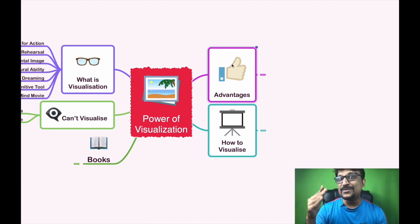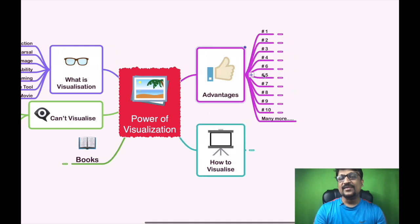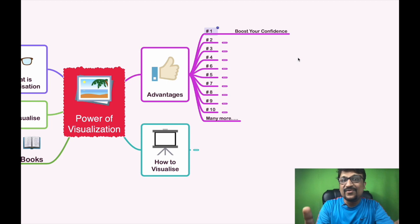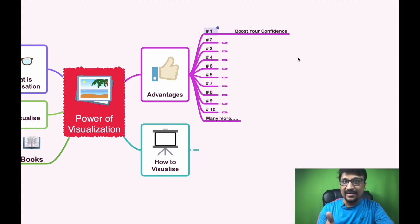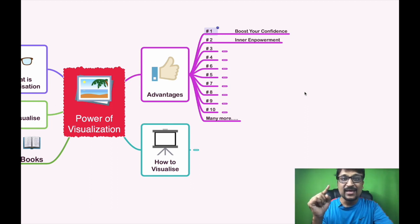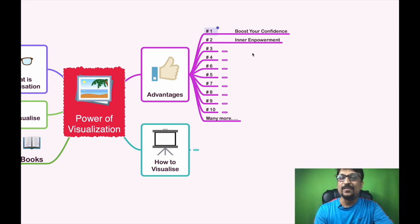Now let us move on to the advantages — why we need to use this visualization process. I listed the top 10 points. The first advantage: if you start visualizing your future and your success, you are definitely going to boost your confidence. When you see where you currently are and where you want to go, your confidence level definitely moves to the next level. The second advantage is inner empowerment — when you start visualizing something you want to achieve within one or two years, you will feel strong inner empowerment.